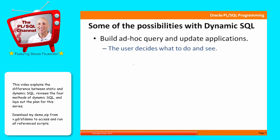Generally speaking, what you're going to do with dynamic SQL is build ad hoc query and update applications. The user has to supply some information so you can execute the statement. For example, you might provide a web page where users specify the columns in the where clause. As they click on checkboxes or radio groups on the page, they're actually specifying the underlying query statement. Generally speaking, the user decides what to do and what they want to see.